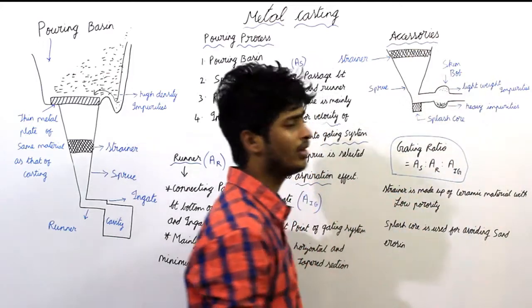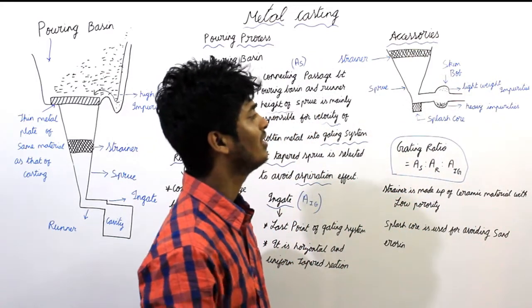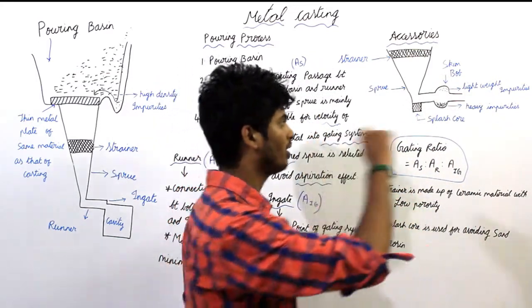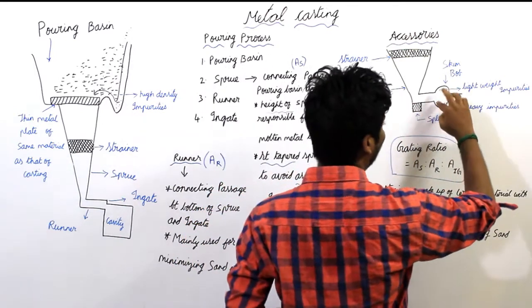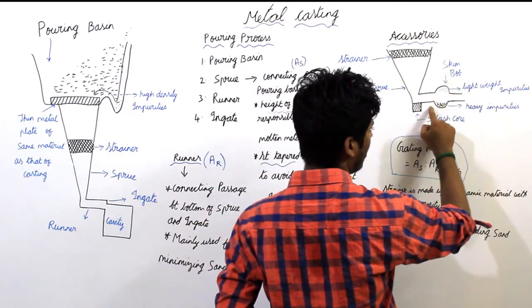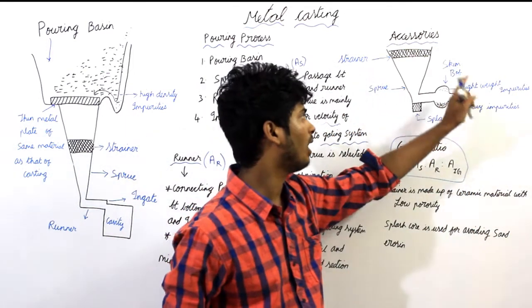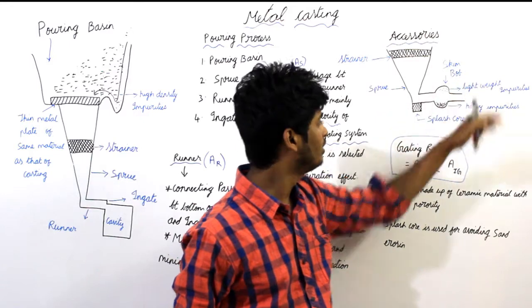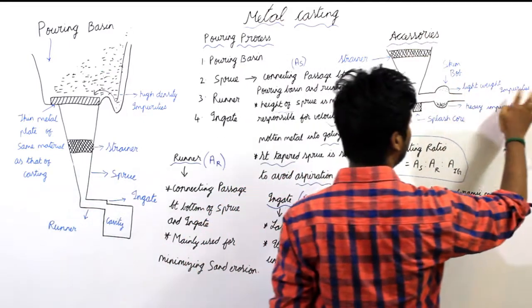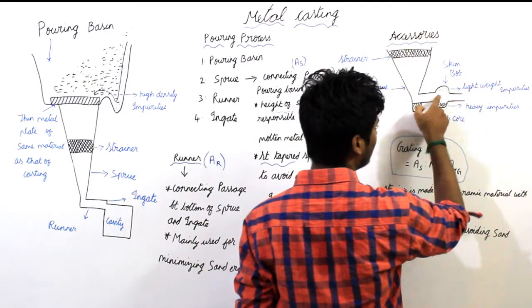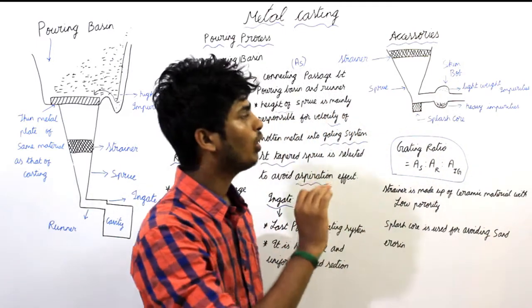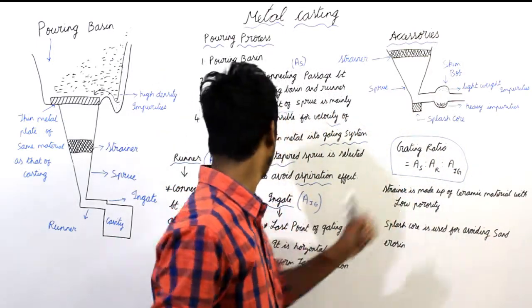Next accessory is skim bob. Skim bob is a semi-circular cut from the runner. It has two portions. Downward portion is used to separate heavy impurities and upward portion is used to remove lightweight impurities so that at center only the pure molten metal can enter into the cavity.